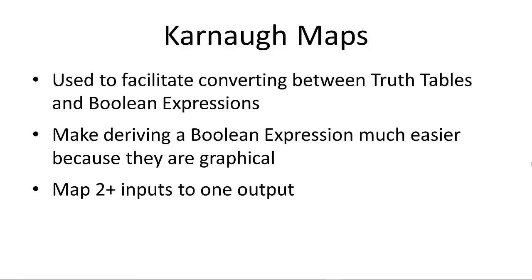They make deriving a Boolean expression much easier than if you were just doing it from the truth table, because a Karnaugh map is an intermediate, a graphical step that's easier to figure out. You can map two or more inputs to one output, and all the values have to be Boolean, 0 or 1.